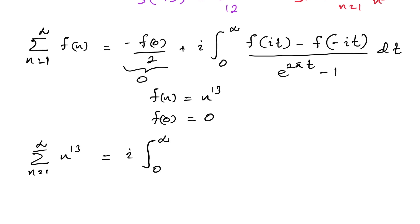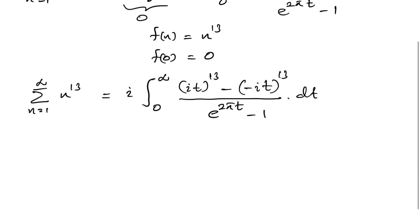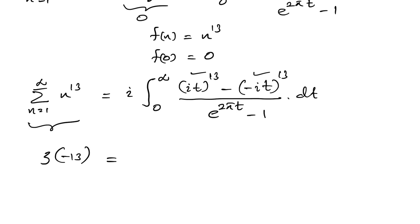This sum equals zeta of minus 13. We now evaluate i^13 and (-i)^13 appearing in the numerator of the integrand. We split the integral into two parts and factor out powers of i accordingly.